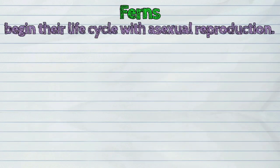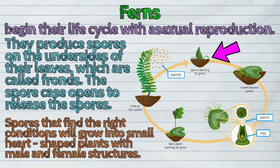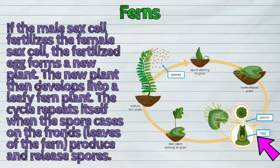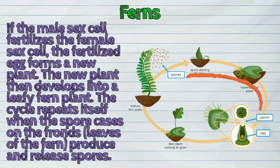Fern, like mosses, begin their life cycle with a sexual reproduction. They produce spores on the undersides of their leaves, which are called fronds. The spore case opens to release the spores. Spores that find the right conditions will grow into small heart-shaped plants with male and female structures. If the male sex cell fertilizes the female sex cell, the fertilized egg forms a new plant. The new plant then develops into a leafy fern plant. The cycle repeats itself when the spore cases on the fronds produce and release spores.